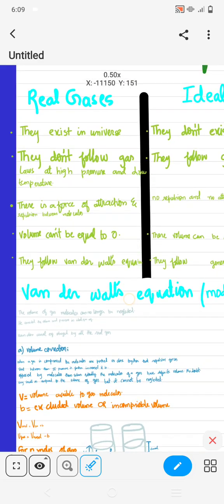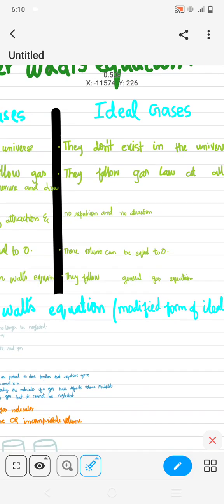So real gases do not follow gas laws at high pressure and low temperature. This is what gas laws says - Boyle's law, Charles law, Avogadro's law. They are applicable to ideal gases, but for real gases they are not applicable.